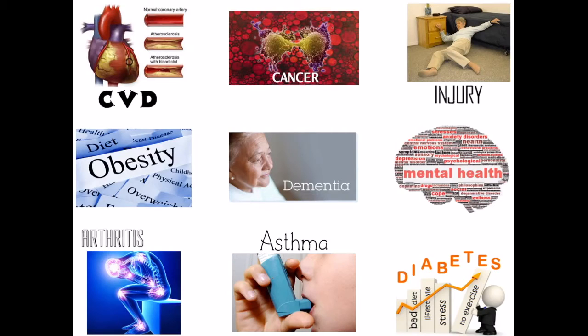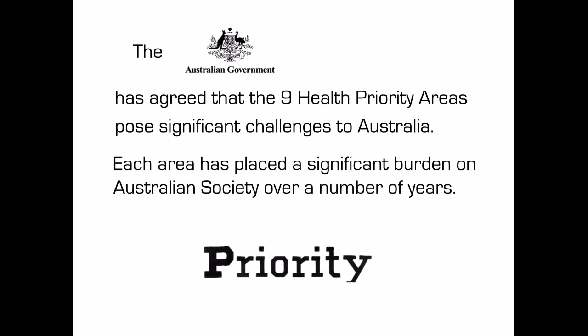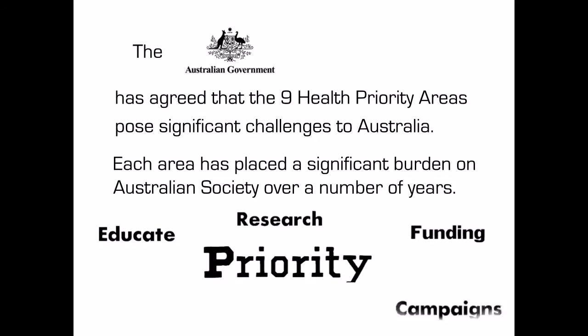The Australian Government has chosen to use a framework of priority health issues to achieve this. Epidemiology plays an important role; however, issues such as social justice, potential for prevention, and costs are important in identifying these priority issues. The nine health priority areas pose significant challenges to Australia, and each area has placed a significant burden on Australian society over a number of years. So the Government prioritises by educating, conducting further research, allocating funding, delivering campaigns to the community, developing new technology, and attempting to empower the community to take control of their own health.